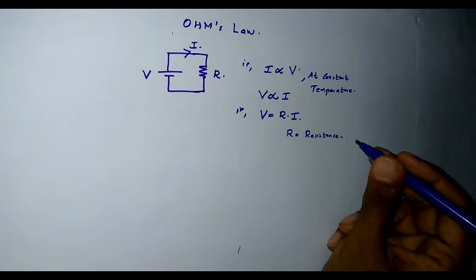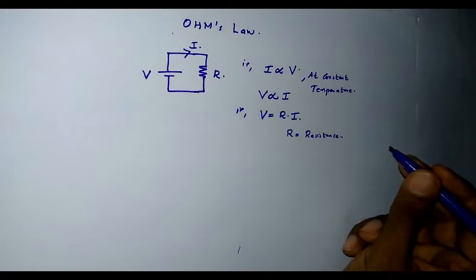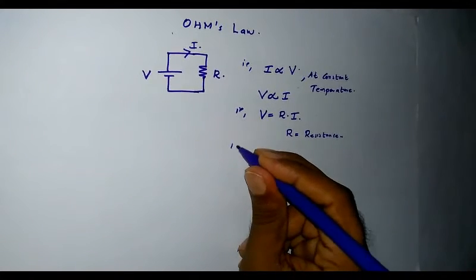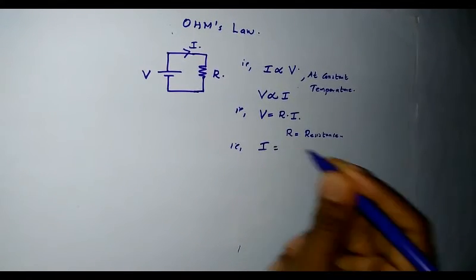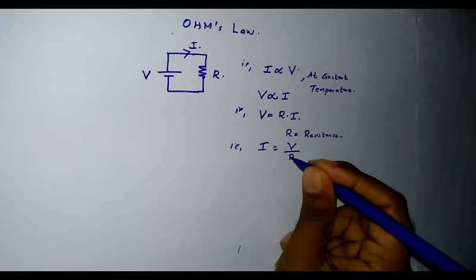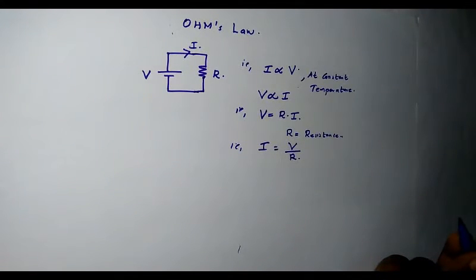From the expression we can also write current flowing through a conductor I is equal to potential difference divided by resistance of the conductor. This is one of the basic laws in electrical engineering.